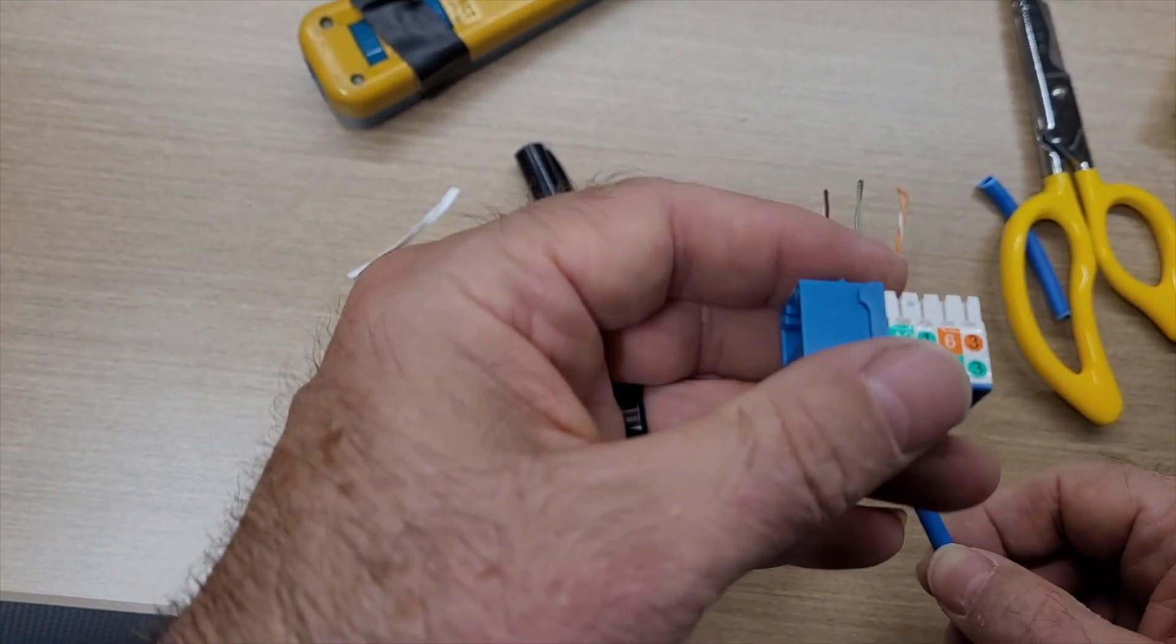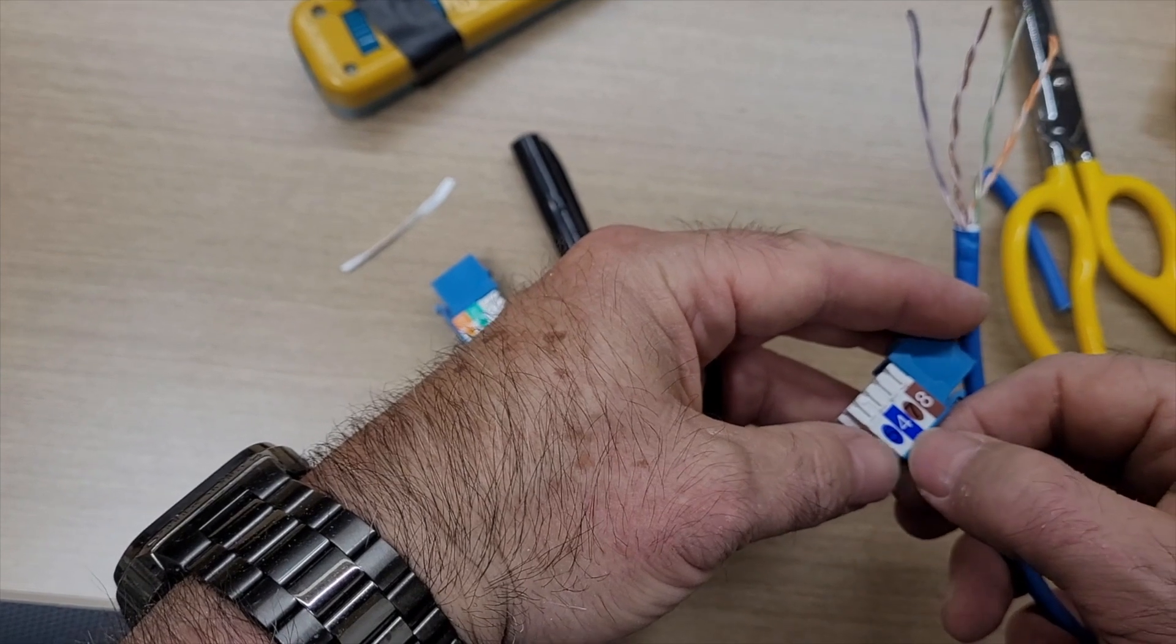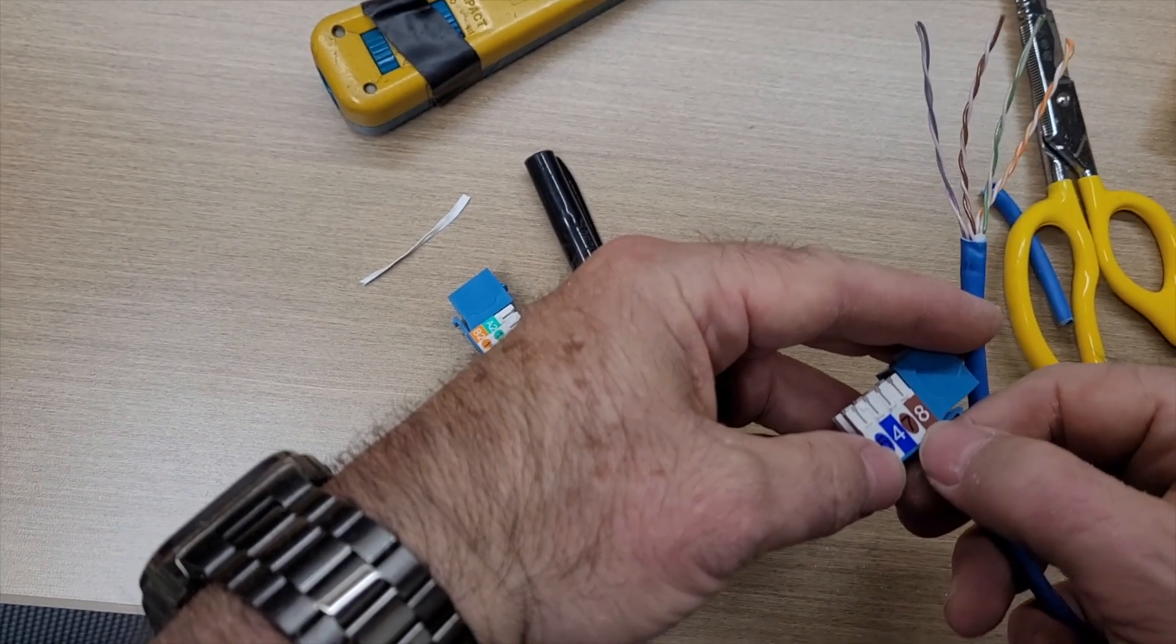Now, your little keystone insert might look different than mine, but they all ultimately do the same thing. They've usually got like a blue, a white-blue, a blue-white, white-brown, and then more brown.